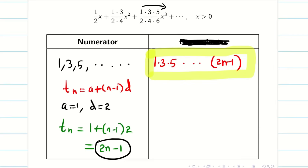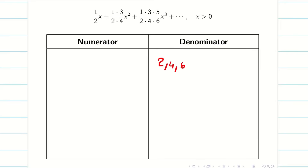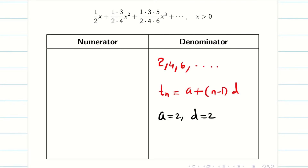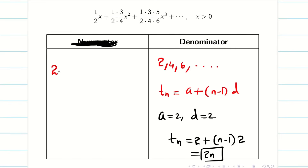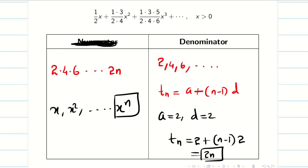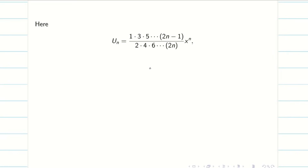For the denominator, we have 2, 4, 6, … — arithmetic progression with a=2, d=2 — giving Tn = 2n. So the nth term for the denominator is 2·4·6·…·2n. For the x term, we have x, x², x³, … so the nth term is x^n. Therefore, the nth term un is: (1·3·5·…·(2n−1)) / (2·4·6·…·2n) · x^n.